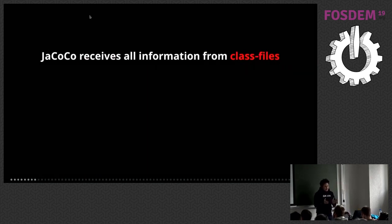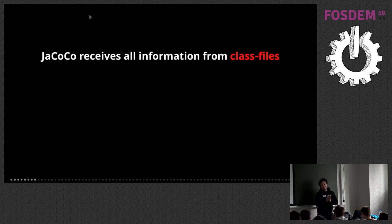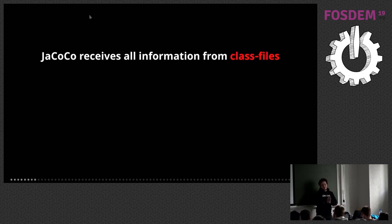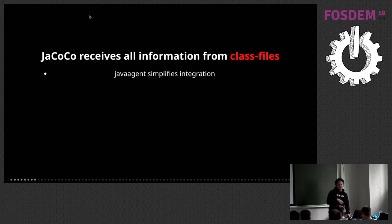Before we start, it's important to understand that JaCoCo works only on class files. It receives all the information from class files. Source files are shown to you at the very end, but in the process they do not play any role. Java agent — super simple integration. You don't need to rebuild your application to get code coverage working. You just attach the Java agent.